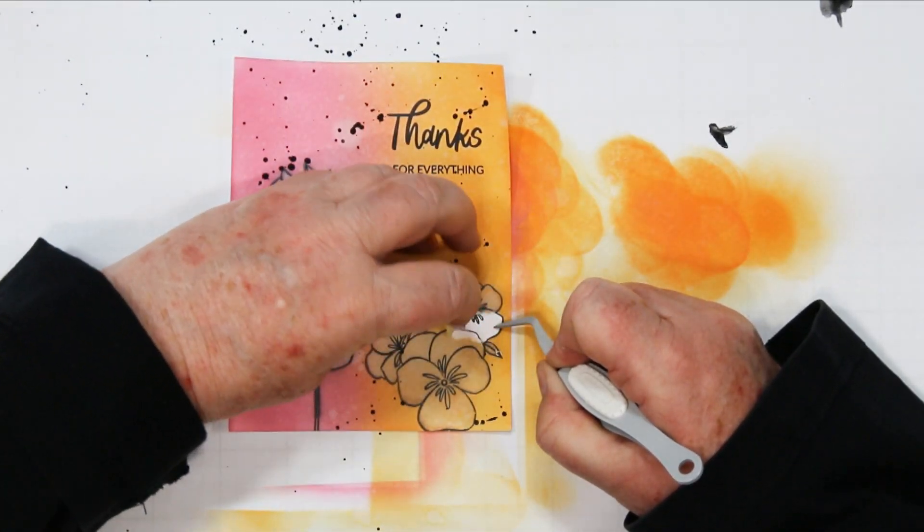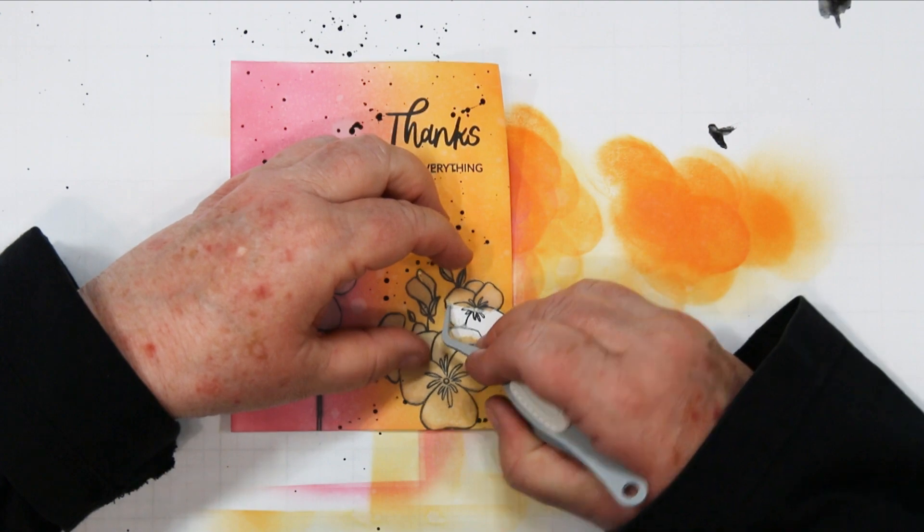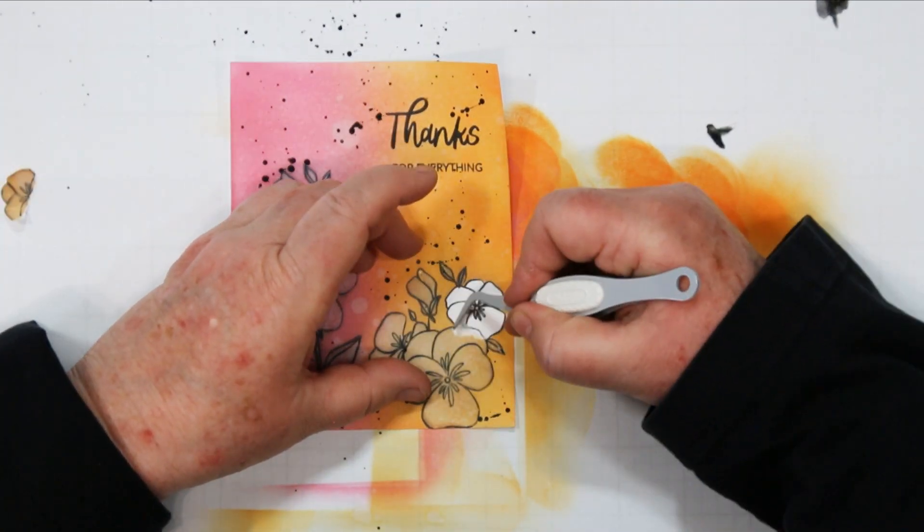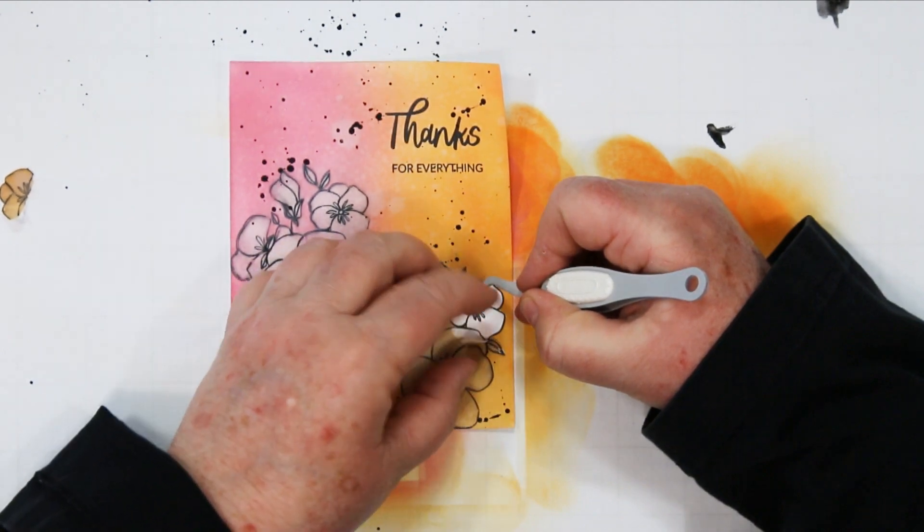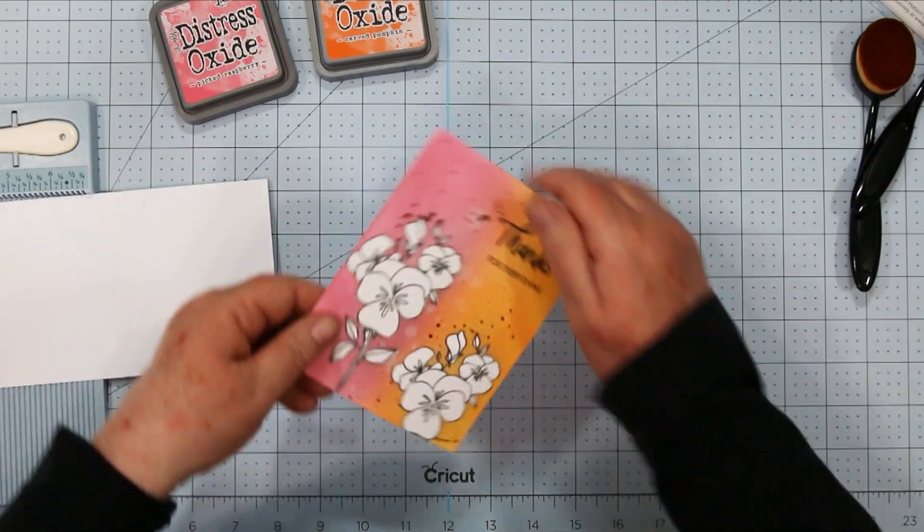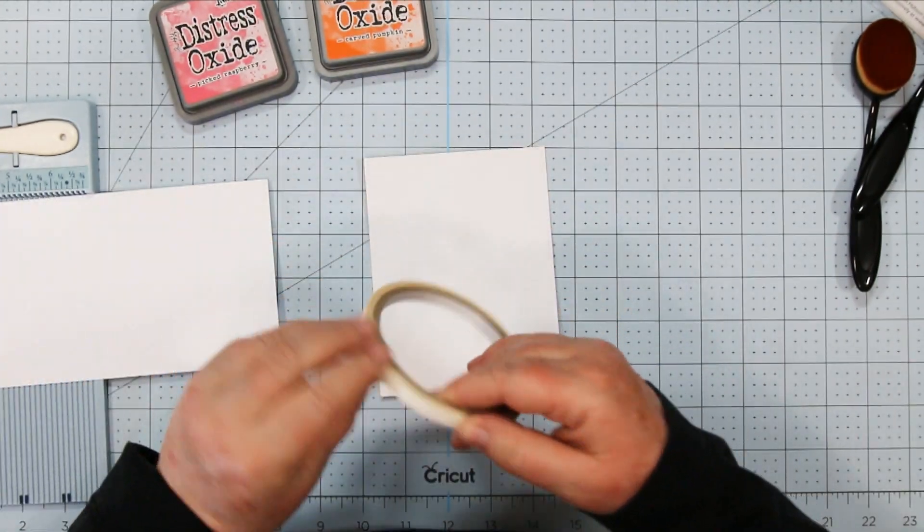Next you want to take your tweezers and gently lift your masking to display your black and white image underneath. This may take a few minutes and you have to be patient so that you get all those little pieces. And just work your way around until it's all shown.